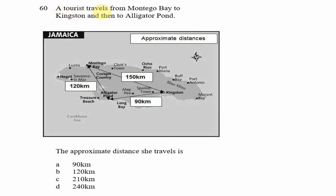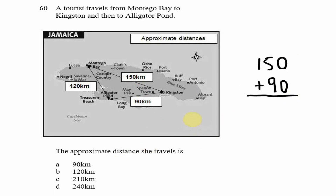Now our final question, number 60 — a tourist travels from Montego Bay to Kingston and then to Alligator Pond. From the map, Montego Bay to Kingston is 150 kilometers, and Kingston to Alligator Pond is an additional 90 kilometers. Adding these: zero plus zero is zero, nine plus five is fourteen — write four carry one — one plus one is two, giving us 240 kilometers total, which is option D.